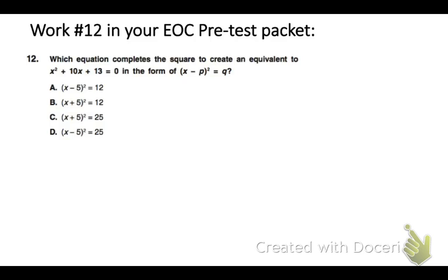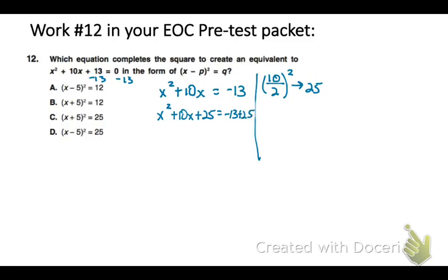So in your pretest packet, go to number 12. Which equation completes the square to create an equivalent to that? So let's just go through that method of completing the square. We're going to subtract that 13 over. x is on one side, numbers on the other. Our b value is 10. So if we take half of that, that's 5, and square it's 25. We add it to both sides. And then on the left side, that's going to factor for us as x plus half of our b value. Half of 10 is 5. On the right side, we'll simplify that to 12. And now we can stop, because we have our equivalent expression after we've completed the square, which is choice b.